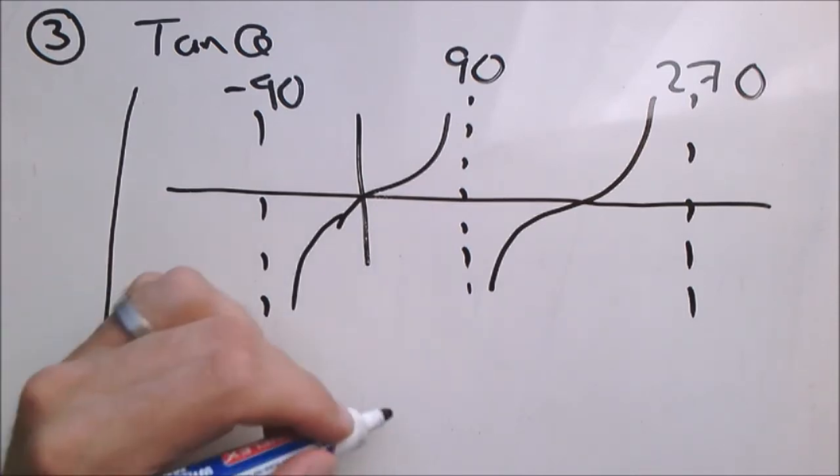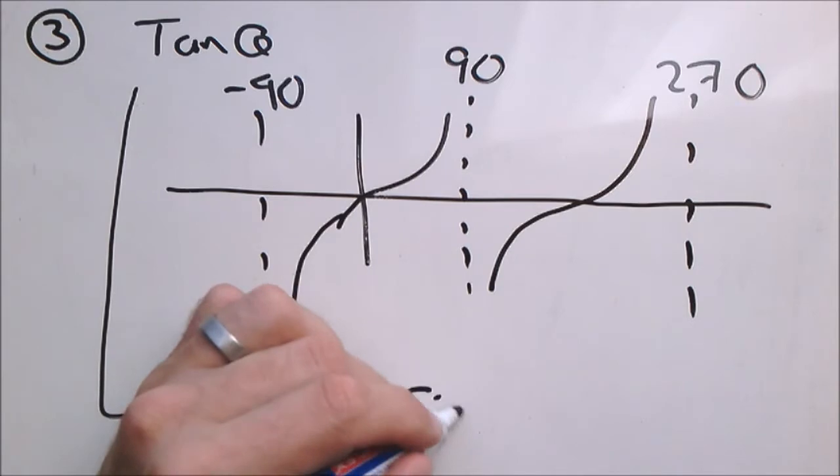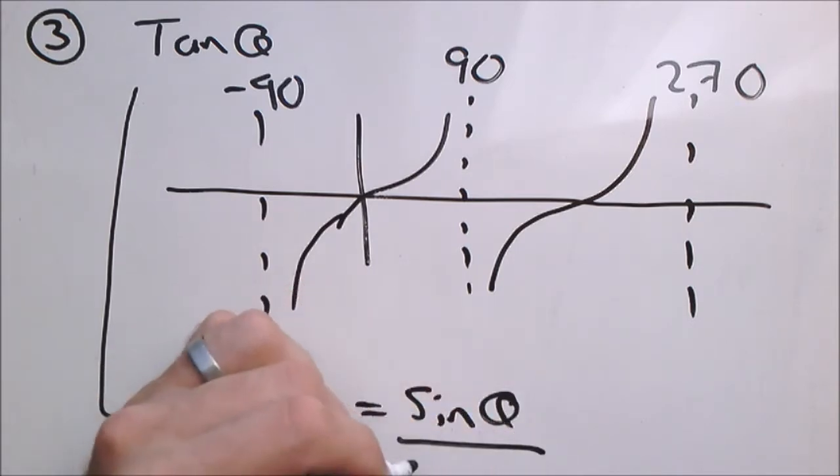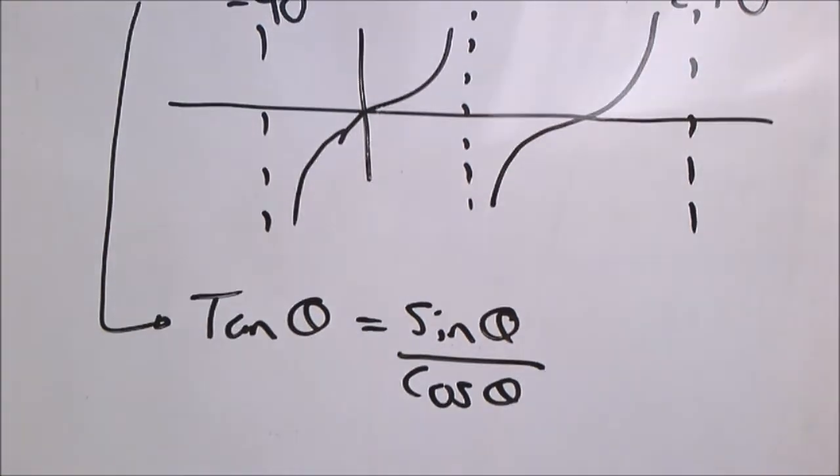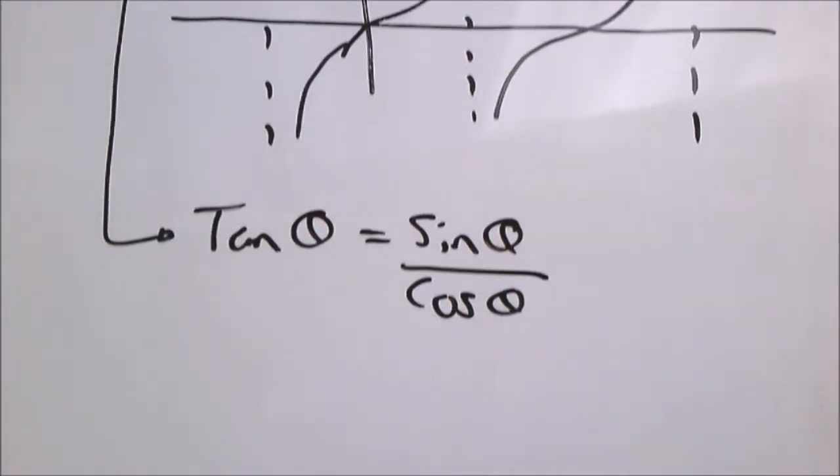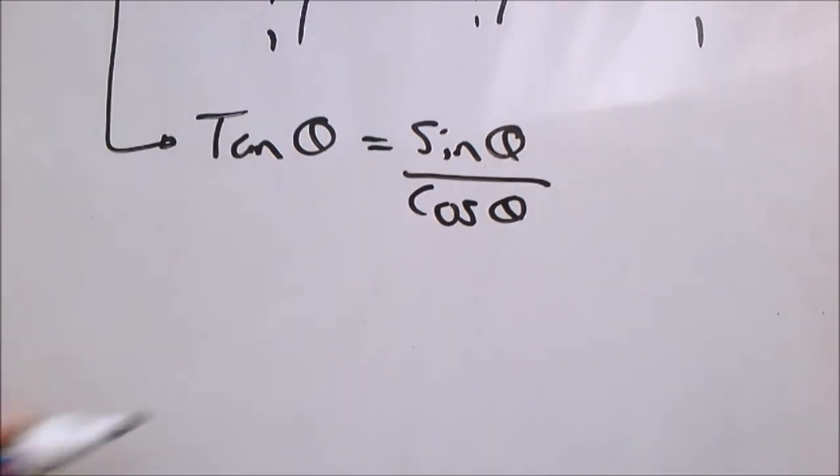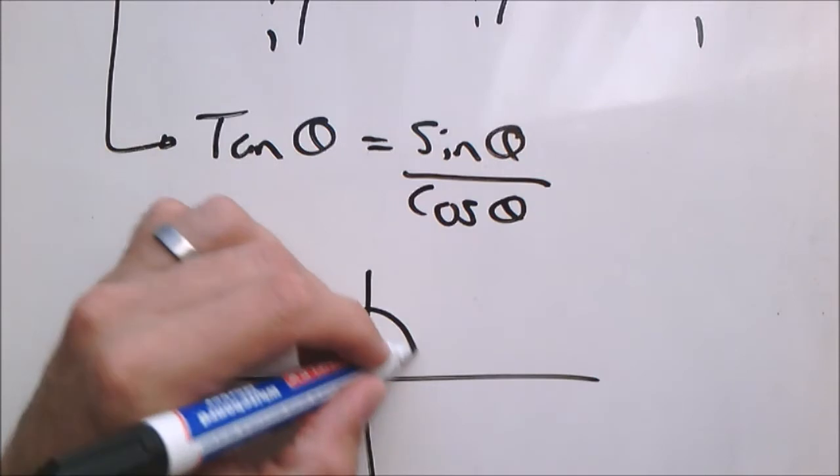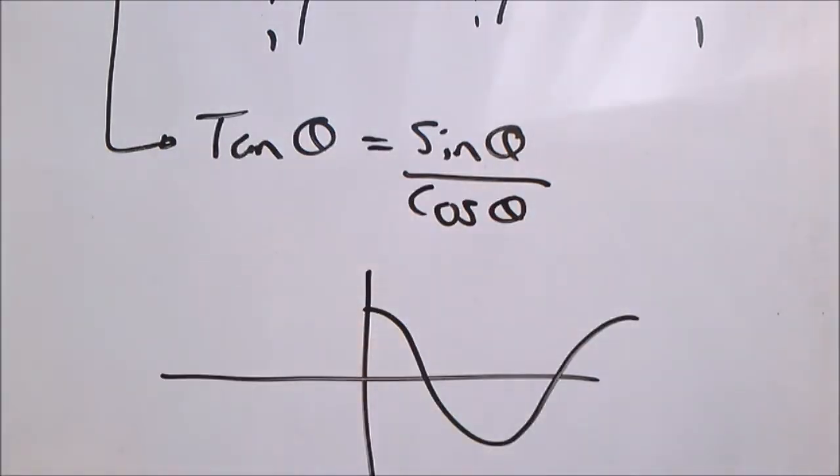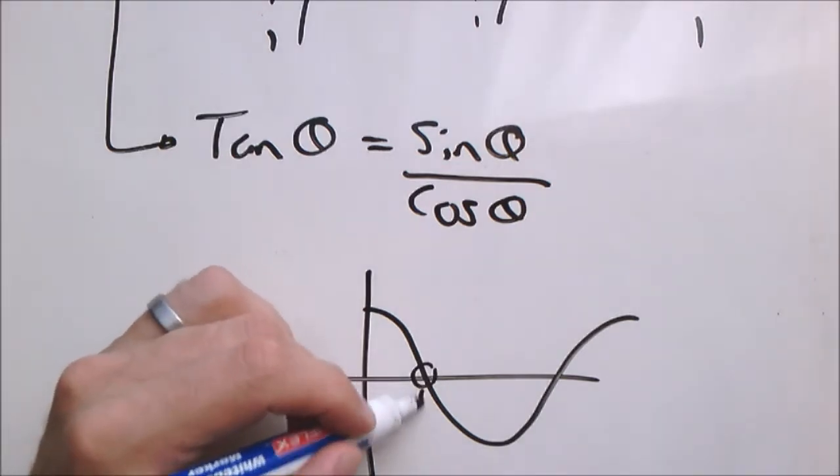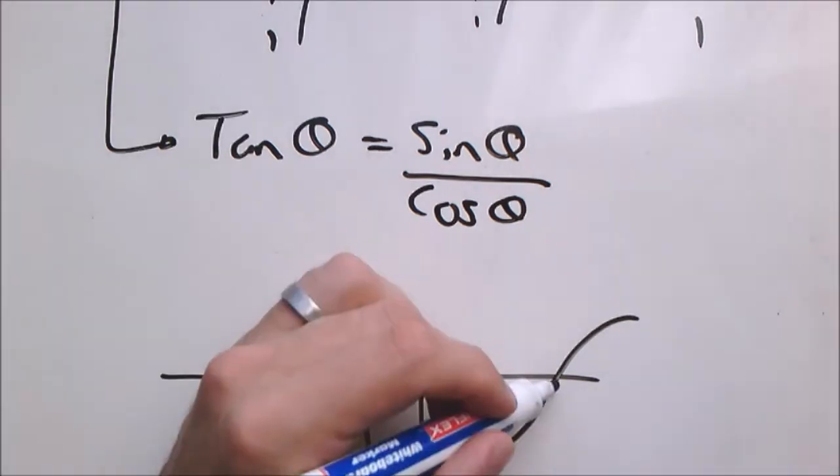Tan theta is equal to sin theta divided by cos theta. The quotient identity. Now if you look at the cos graph. Where is cos theta 0?